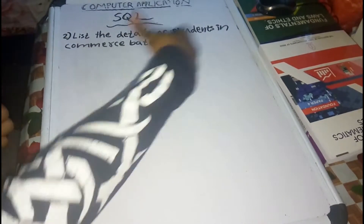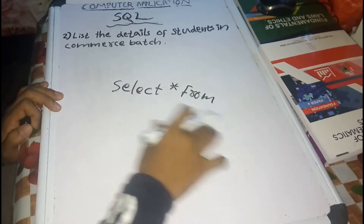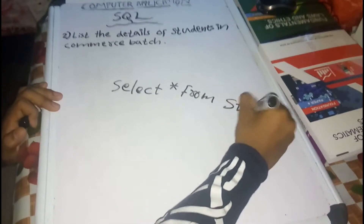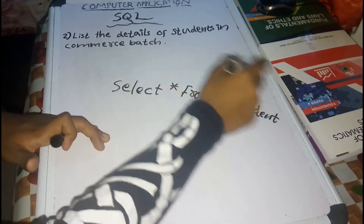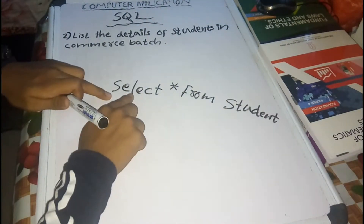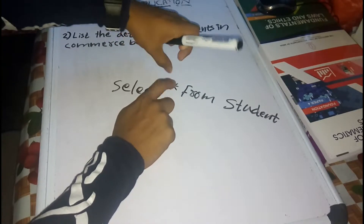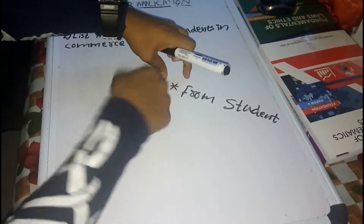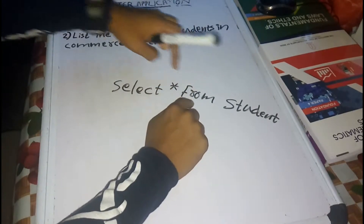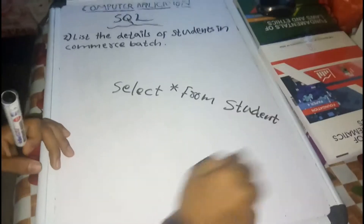We have a question. If you want to find a table, you can find a command: SELECT star FROM. What is the name of the table? The name is student. It's a command. SELECT star FROM student — we just see the star from there. SELECT from student. This is the commerce details.